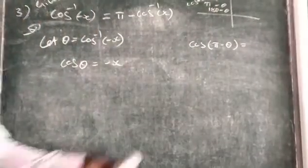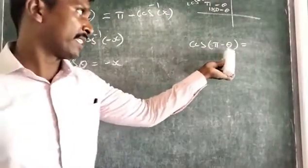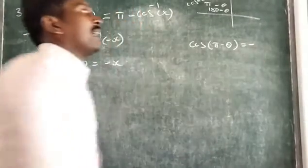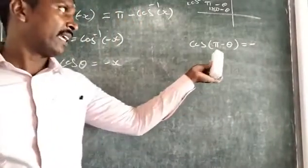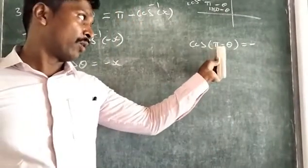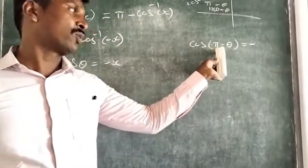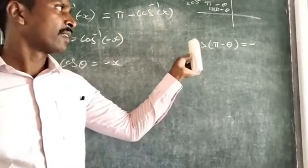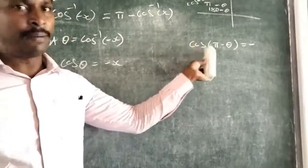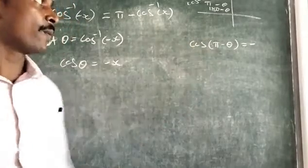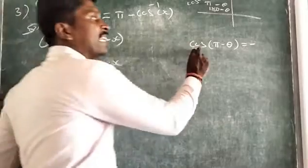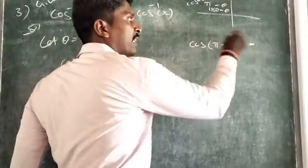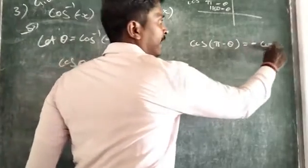So we have cos(180° - θ), and cos will be negative. Here, if we have only 90 or 270 we would need to change the ratio, but we have only 180 degrees, so we don't need to change the ratio. The cosine in the second quadrant is negative, so it becomes -cos(θ).